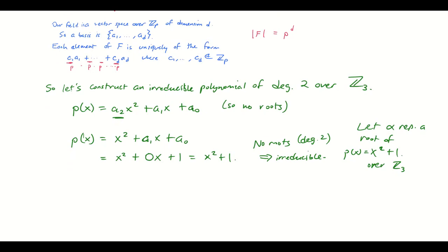And then consider Z mod 3 adjoint alpha. If you don't like that, if you don't like this, well, why can we let alpha be a root? Then do this instead. Take Z mod 3 adjoint x and mod out by the ideal generated by x squared plus 1. Same deal there, it's going to be isomorphic.